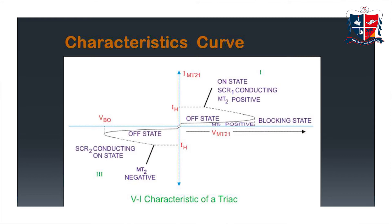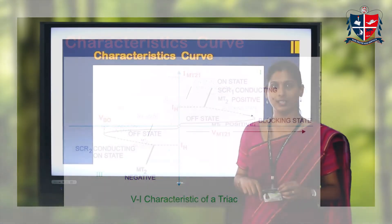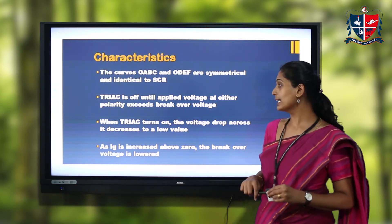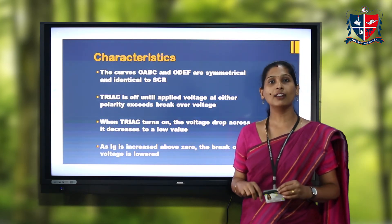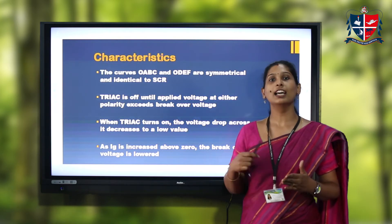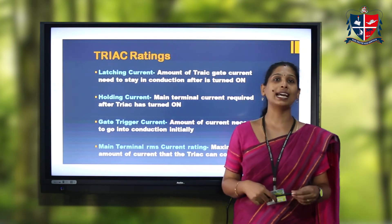In mode four, MT2 is made negative with respect to MT1, and SCR2 will be in the conducting state. On a similar value of breakover voltage, the TRIAC will start conducting and the corresponding holding current is also given. The TRIAC operation is somewhat similar to that of an SCR — the graphical shape is identical, and in mode one and mode four it is symmetrical. We can control the breakover voltage: as we increase the gate current applied to the gate terminal, we can decrease the breakover voltage so the TRIAC conducts sooner.